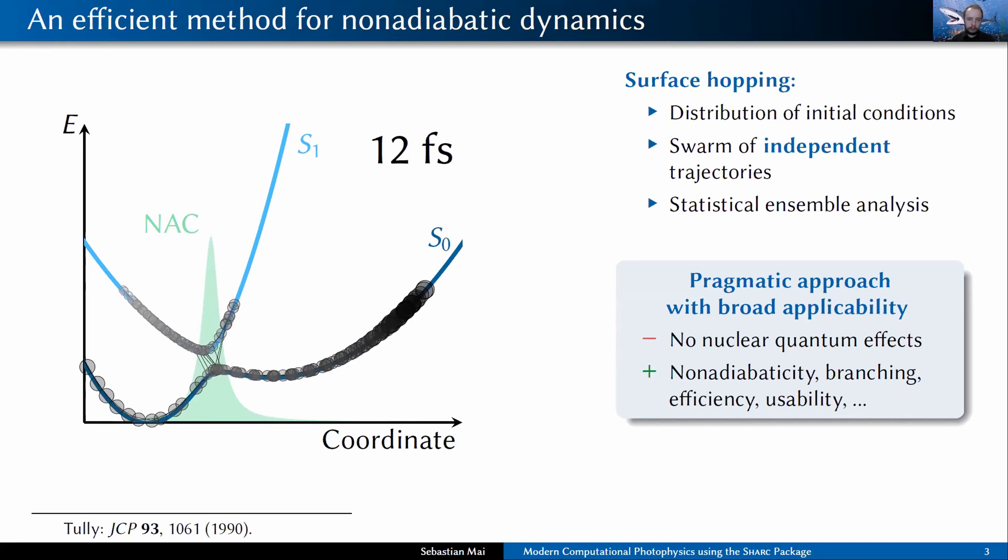Even though you're missing a lot of quantum mechanic effects, like nuclear quantum mechanical effects, zero point energy and tunneling and so on, and you have these decoherence problems, still surface hopping is a simple method that gives you non-adiabatic dynamics, gives you branching, is relatively efficient due to the independent trajectories approach and classical trajectories, and it's very usable. It has great interpretability and it's easy to implement. These are reasons why we are using surface hopping in the SHARC package currently.